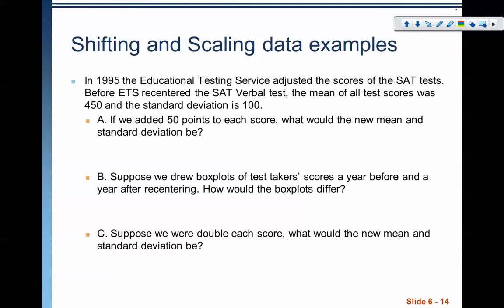Let's do a quick example. In 1995, the Educational Testing Service adjusted the scores of the SAT tests. Before ETS re-centered the SAT verbal test, the mean of all test scores was 450, and the standard deviation is 100. If we added 50 points to each score, what would the new mean and standard deviation be? We're adding 50 points to each score. Remember, addition and subtraction influences the mean only, not the standard deviation. My new mean is going to be my original mean plus the 50 that we're adding, so that makes it 500. My standard deviation is remaining unchanged at 100 because it is not influenced by changes in addition and subtraction.